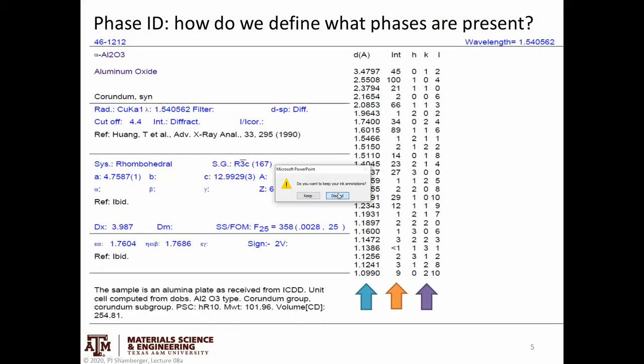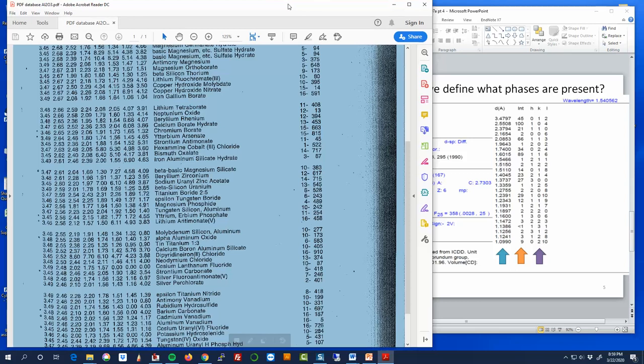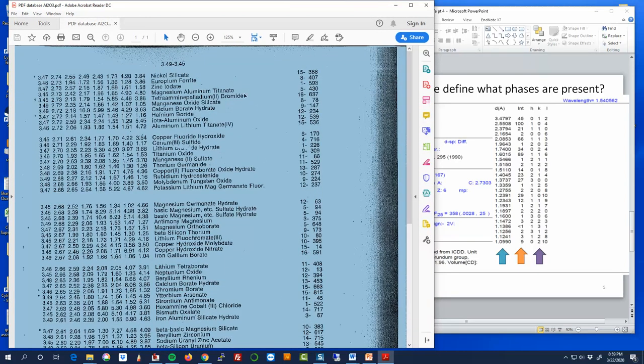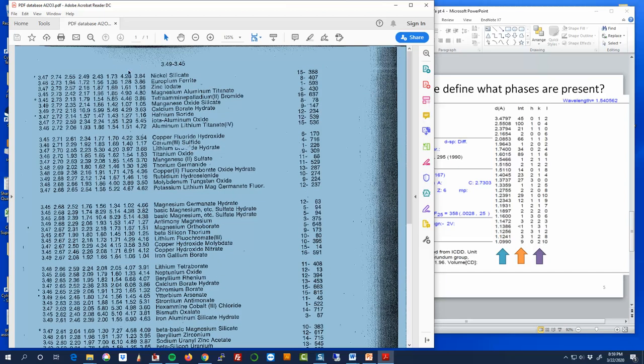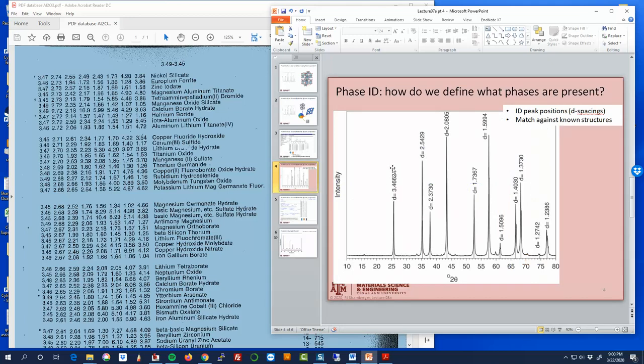This is an example of a page from that book. I have one on my shelf. I don't use it very often because we all use computers now. It's showing different phases, ordered by the first peak you would expect to see, then the second, the third, the fourth, and so on. This page shows samples where that first peak is anywhere between 3.49 and 3.45. Our first peak was at 3.46, so our peak would be somewhere in this range. We have to say plus or minus a few hundredths of an angstrom is acceptable offset.